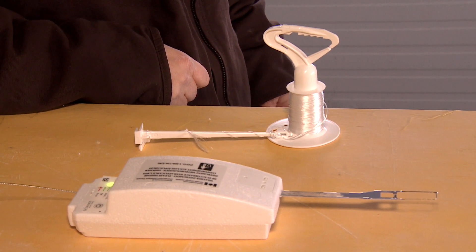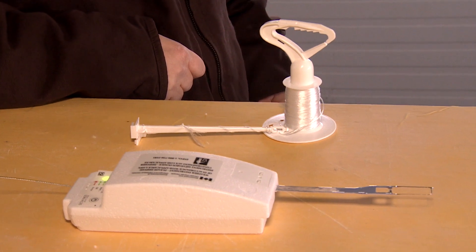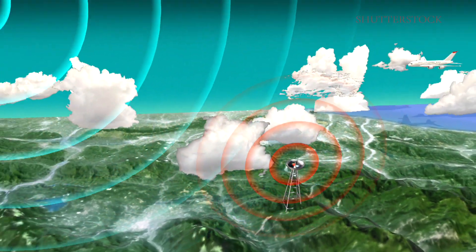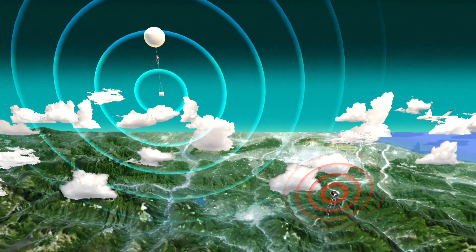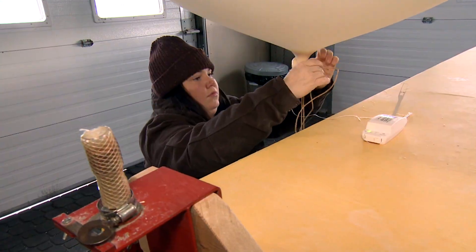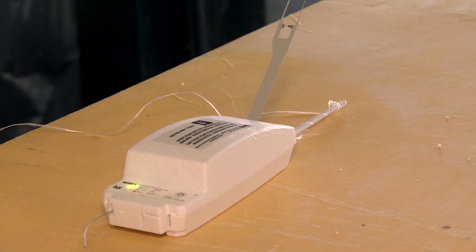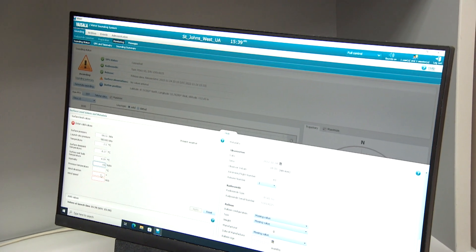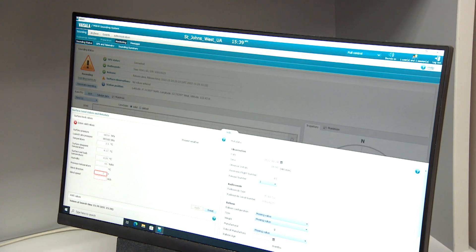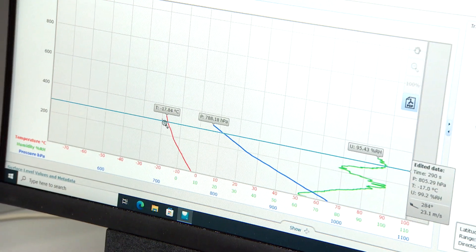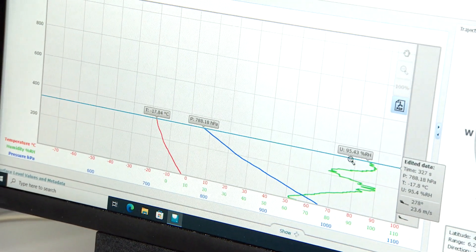So this right here is the radiosonde. This is what is attached to the balloon. This has sensors in it for temperature and humidity, and this will give us real-time data. As this is going up, it will send back all the information to our grounding station inside, and this is how we get all the information from all the parameters as it's going up through the upper atmosphere. And what are the parameters that you're measuring? Today, we'll be measuring temperature and pressure and humidity and the winds.